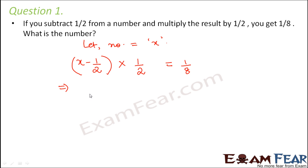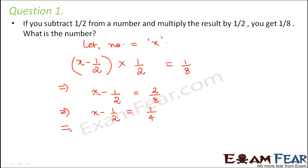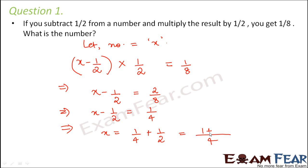So this is actually x minus 1/2 is equal to — this 2 will go on this side, so it comes to the numerator — 2/8, which simplifies to 1/4. So x is equal to 1/4 plus 1/2, which equals 1 plus 2 over 4, that is 3/4. Therefore, the value of x is equal to 3/4.